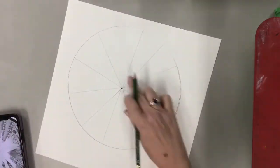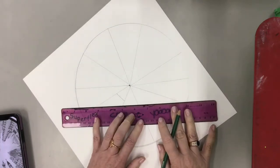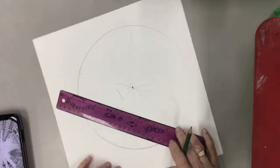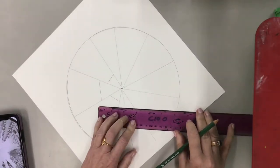So I'm just gonna take a ruler and I'm gonna draw lines. I'm gonna make some of these pieces shorter and some bigger.